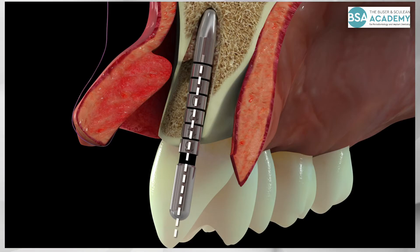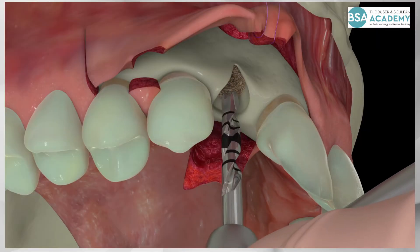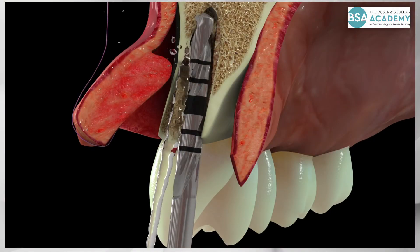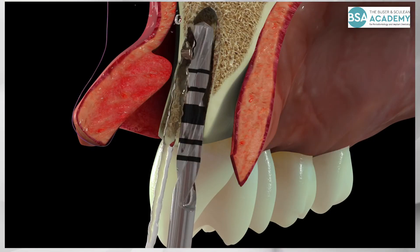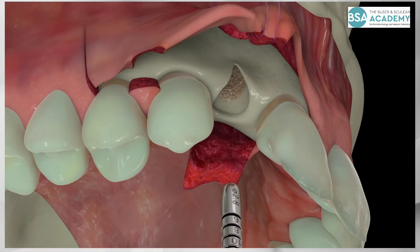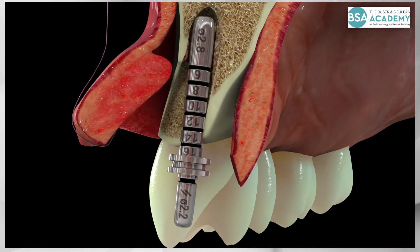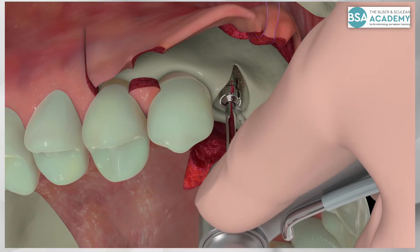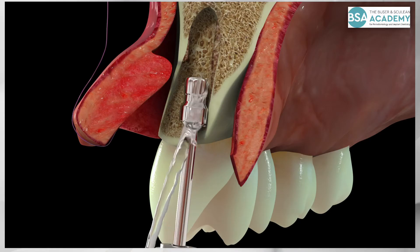It is obvious that the axis must be carefully corrected to a slightly more inclined axis. This is done with the second spiral drill using a reduced drilling speed of 500 rpm. The preparation depth is chosen at 14 mm. The second depth gauge confirms the correct implant axis. The final preparation is done with a profile drill, removing bone at the inner surface of the palatal bone wall.